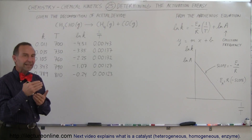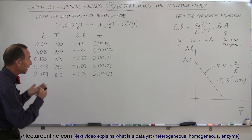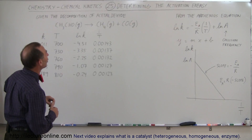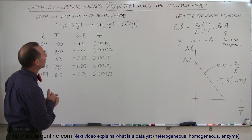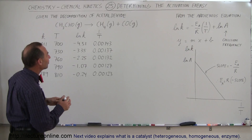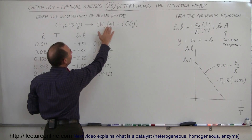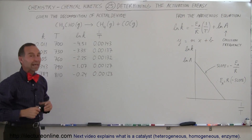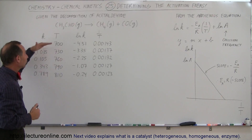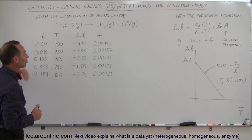So how do we find that activation energy? What we can do is take some measurements. For example, here we have a sample decomposition of acetaldehyde — CH3CHO — it's a gas, and it decomposes into methane and carbon monoxide gas. Let's say that we change the temperature and at various temperatures we measure the various reaction rate constants.